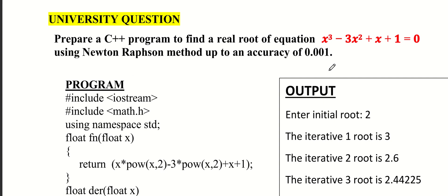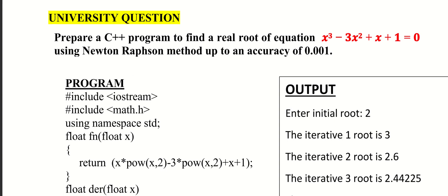We will find a real root of the equation x cube minus 3x square plus x plus 1 is equal to 0 using the Newton-Raphson method up to an accuracy of 0.001.